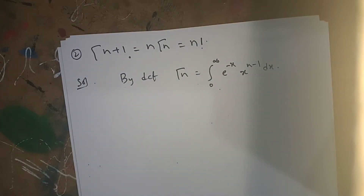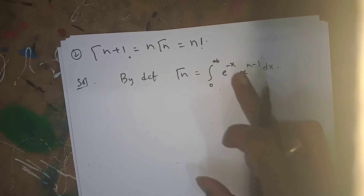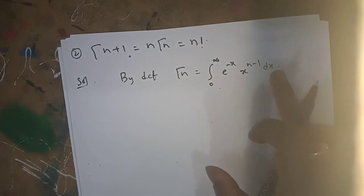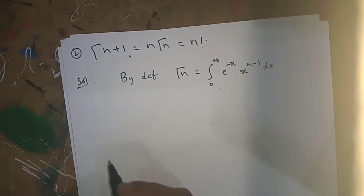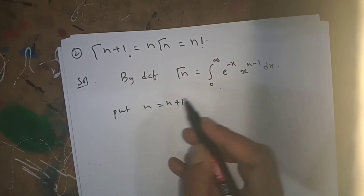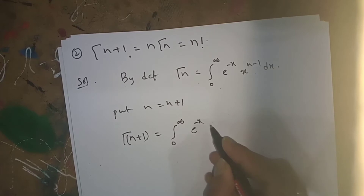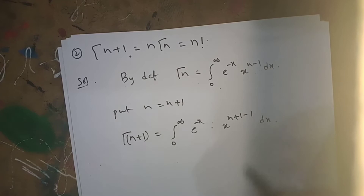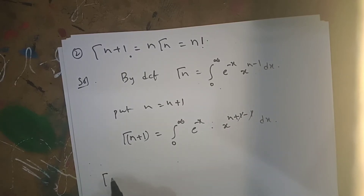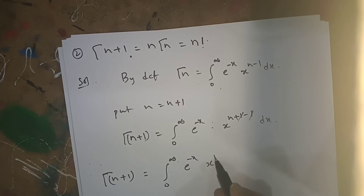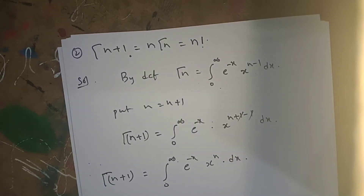The second property: gamma(n+1) = n·gamma(n) = n factorial. To prove this, by the definition of the gamma function, gamma(n) = integral from 0 to infinity of e to the power of minus x into x to the power of n minus 1, dx. We substitute n with n+1: gamma(n+1) = integral from 0 to infinity of e to the power of minus x into x to the power of n+1 minus 1, dx. Since (n+1) minus 1 = n, we get gamma(n+1) = integral from 0 to infinity of e to the power of minus x into x to the power of n, dx.